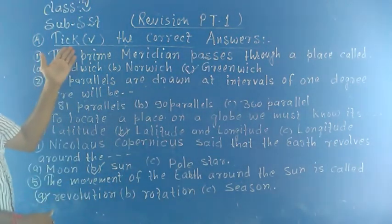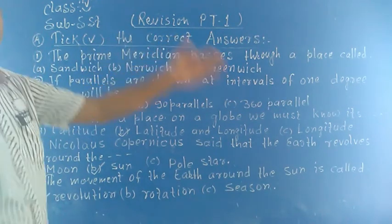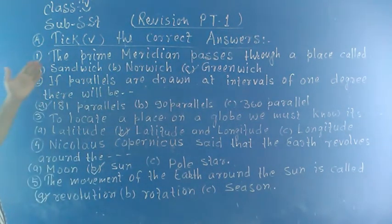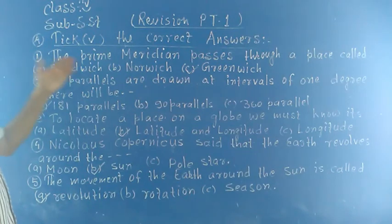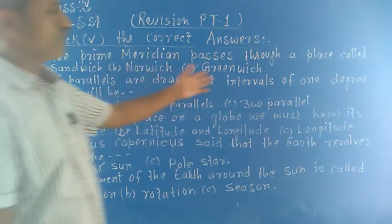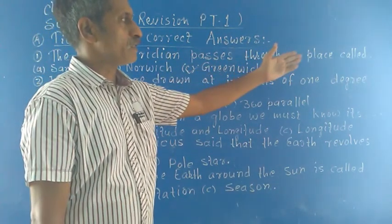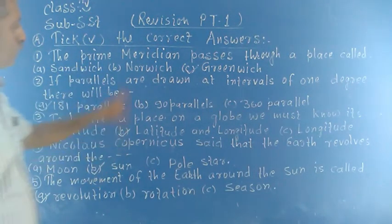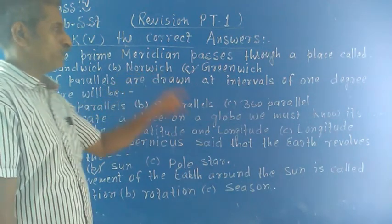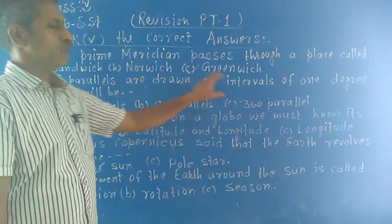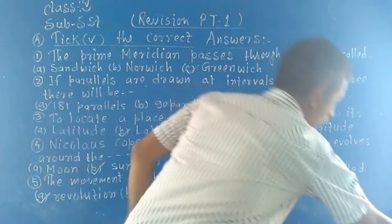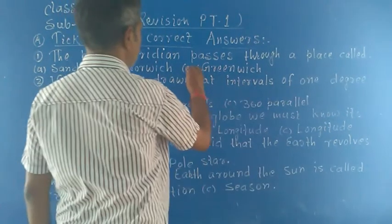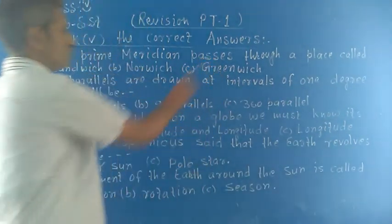Question is, tick the correct answer. Now, question number 1: The Prime Meridian passes through a place called. First, sandwich; second, Norwich; third, Greenwich. Answer is Greenwich.